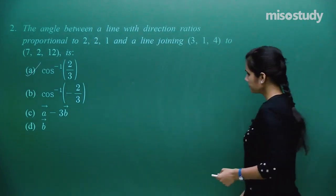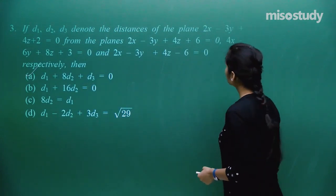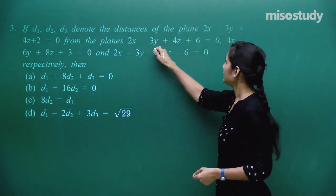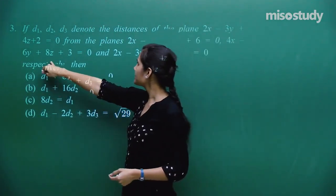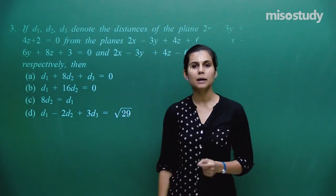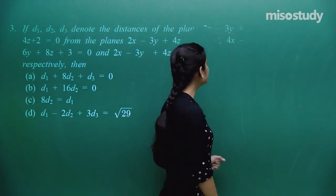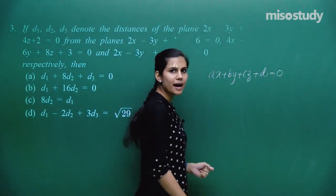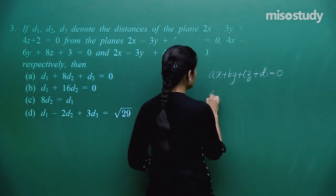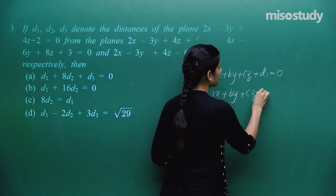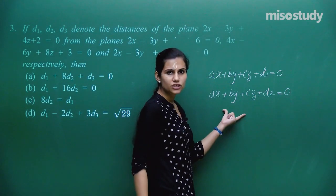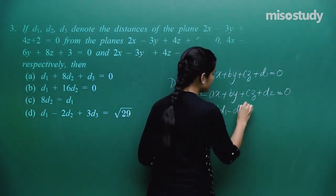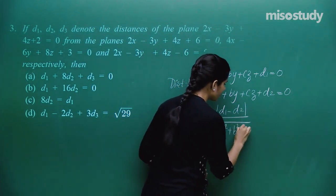Moving to the next question: d1, d2, d3 denote the distances of a plane from three distinct planes. The planes 2x−3y+4z, 2x−3y+4z, and 4x−6y+8z are all parallel to each other. The distance between two parallel planes Ax+By+Cz+D1=0 and Ax+By+Cz+D2=0 is |D1−D2| / √(A²+B²+C²).